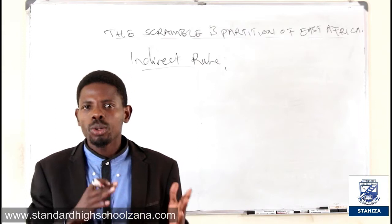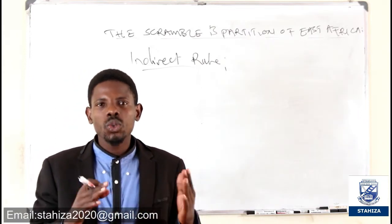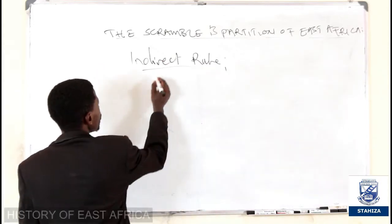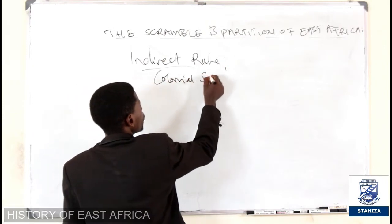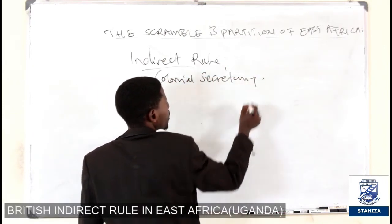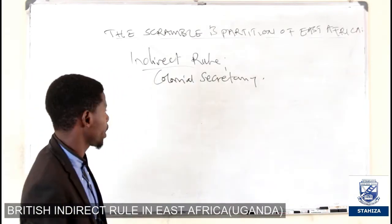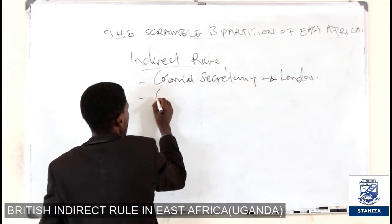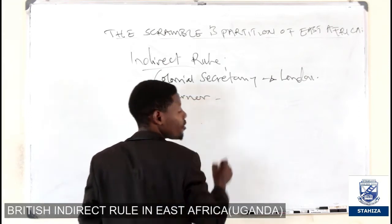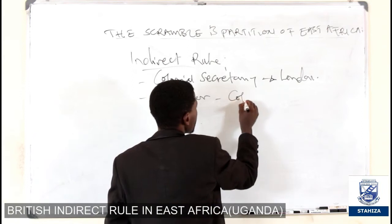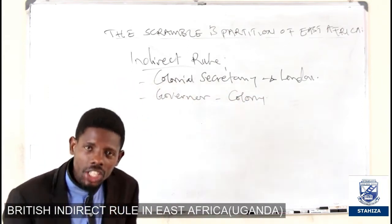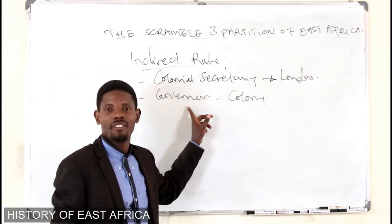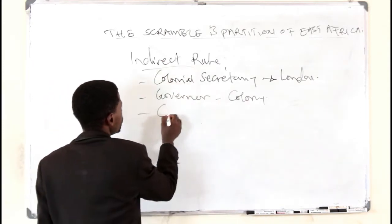We talked about how indirect rule worked through a chain of leaders, all the way from the Colonial Secretary who sat in London. Beyond the Colonial Secretary in London was a Governor, who was always stationed in the particular colony, meaning each British colony had its own governor. Beyond the governor was the Commissioner or Provincial officer.